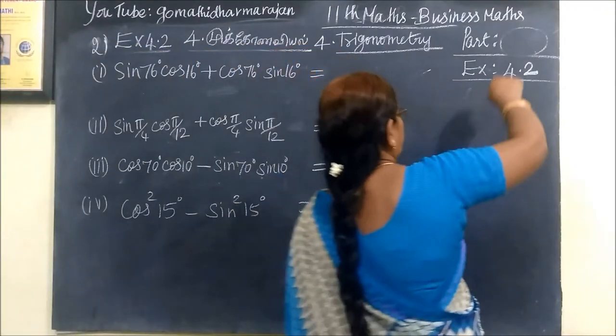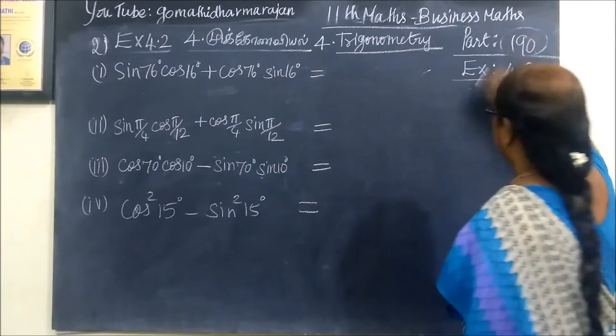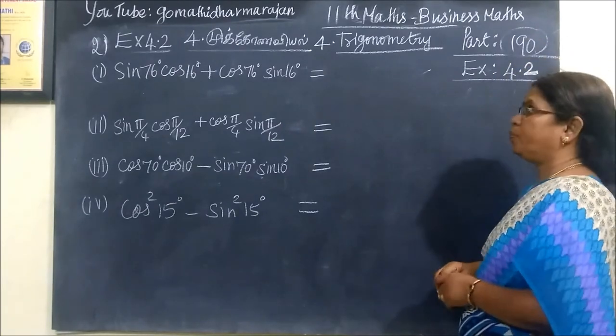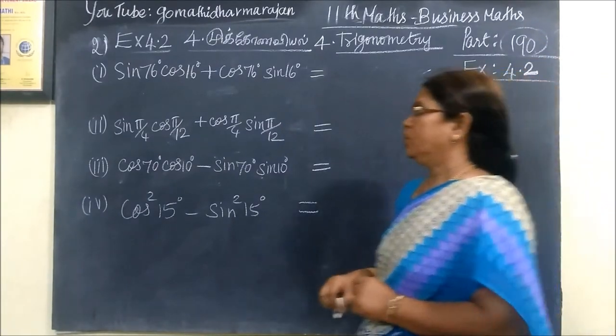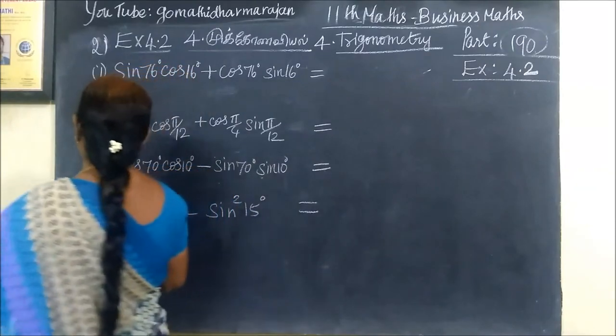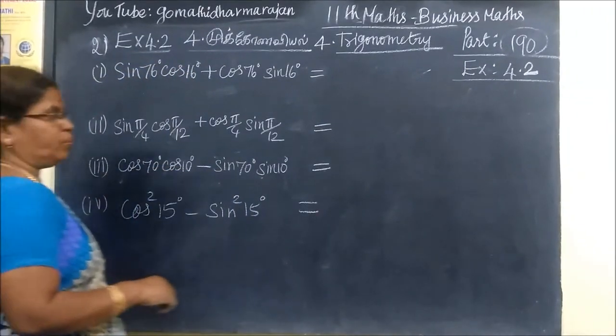So next one is part 193. S is 5.2 - sorry, 4.2. Question number 2. Submission 1, 2, 3, 4. This is easy to answer.